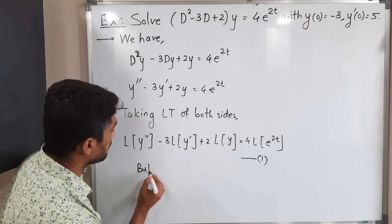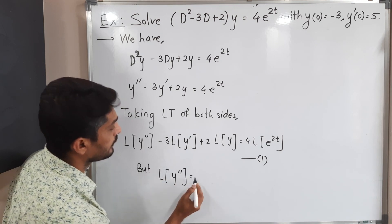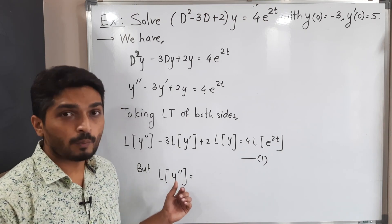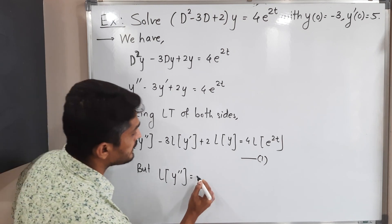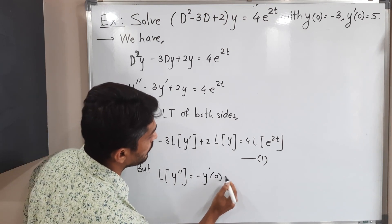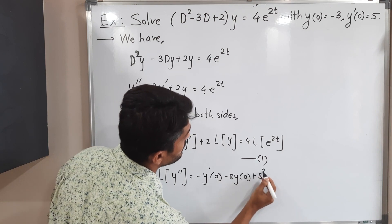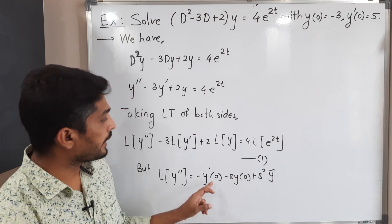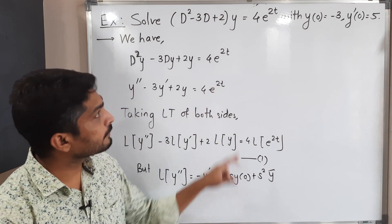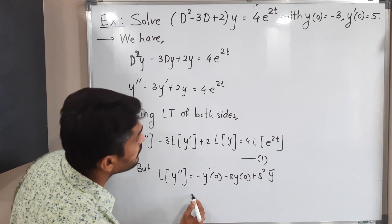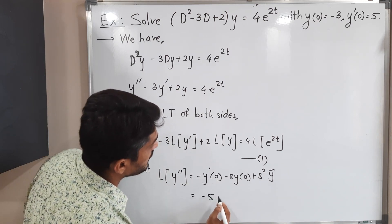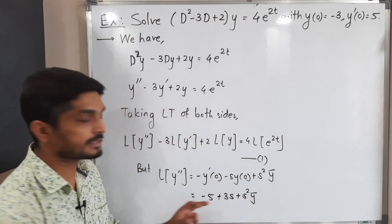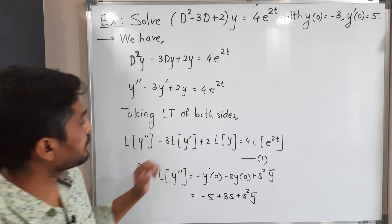As seen in the first lecture, the formula for L{y''} is: s²·L{y} - s·y(0) - y'(0), which equals s²·ȳ - s·y(0) - y'(0). With y'(0) = 5 and y(0) = -3, substituting gives: s²ȳ + 3s - 5.